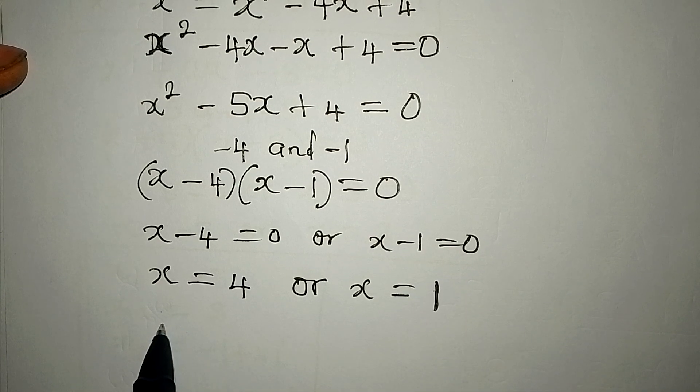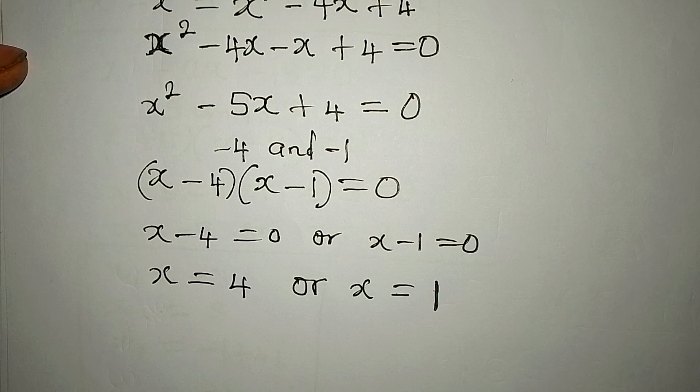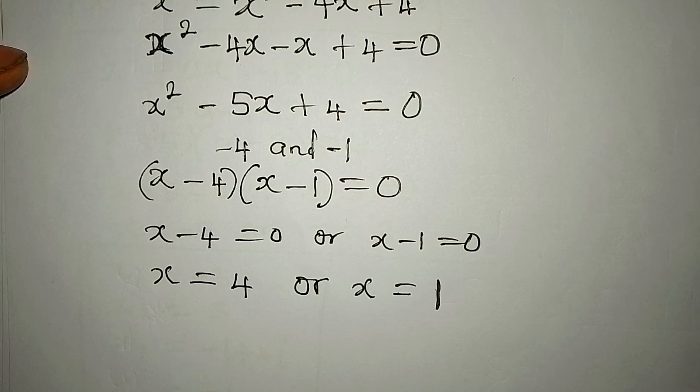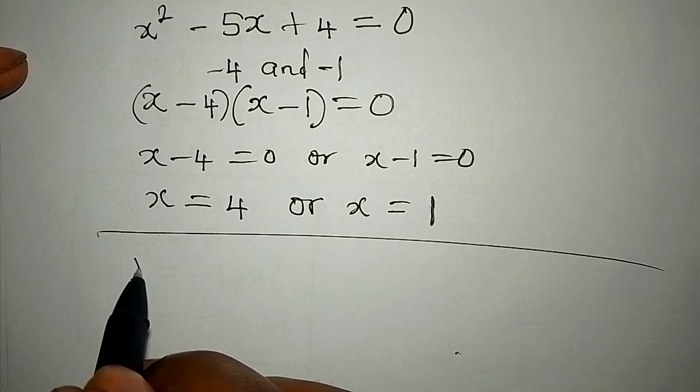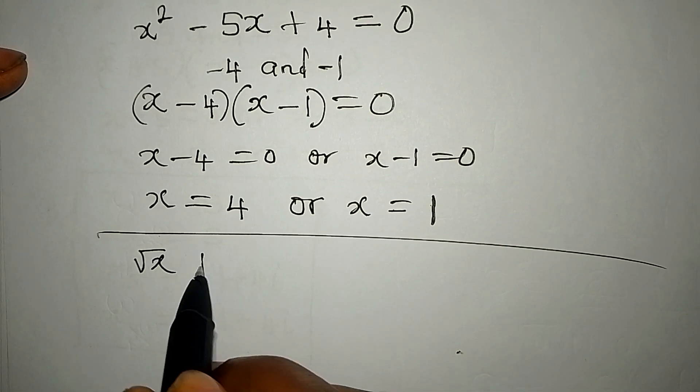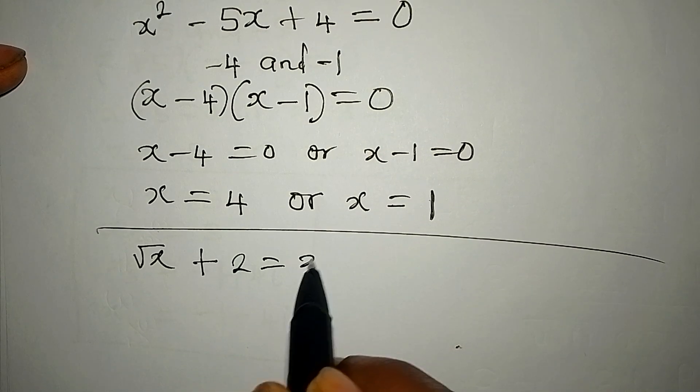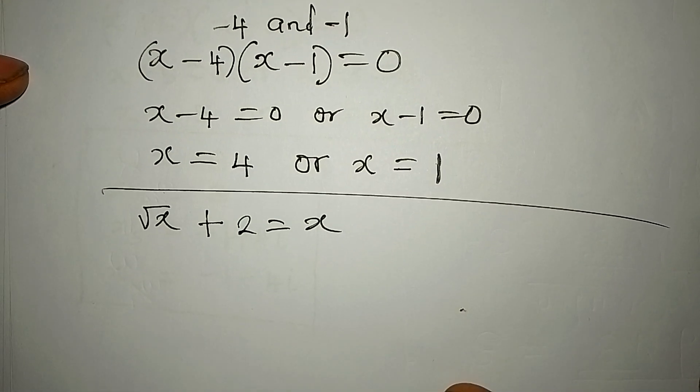So do we think we can have two solutions that will satisfy the equation? Now let's deal with it. We have the original equation, which is root x plus 2 equals x. So let's put 4 over there.